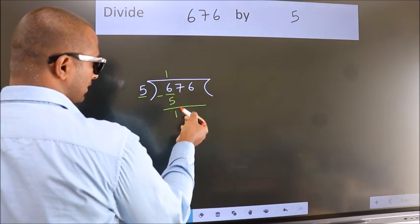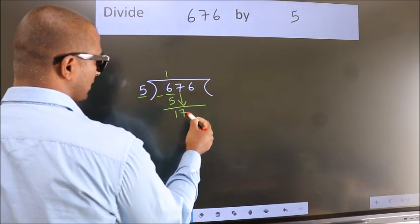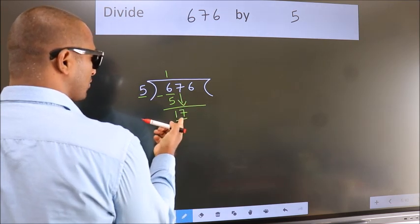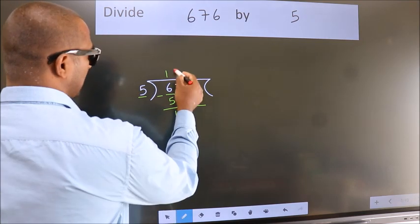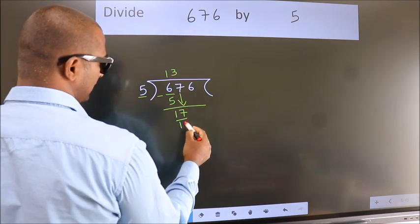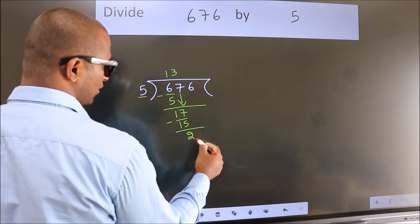After this, bring down the beside number. So 7 down. So 17. A number close to 17 in the 5 table is 5 threes 15. Now we subtract. We get 2.